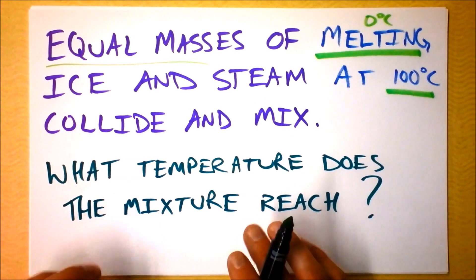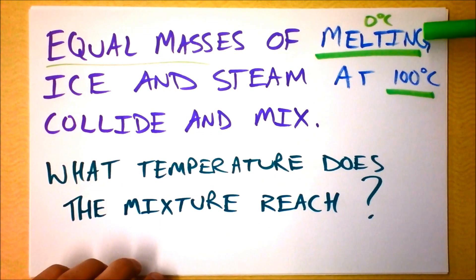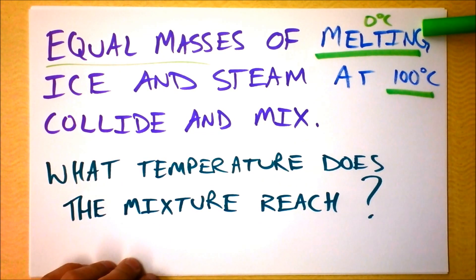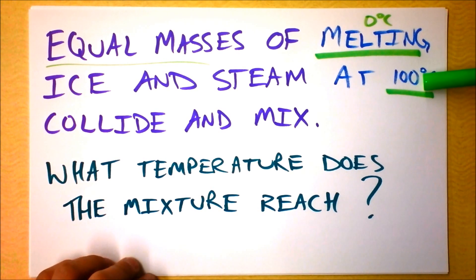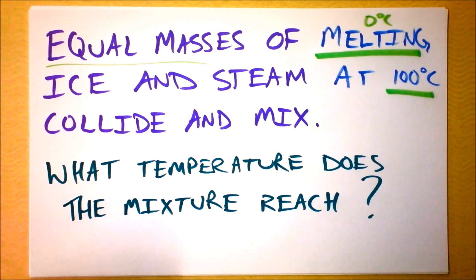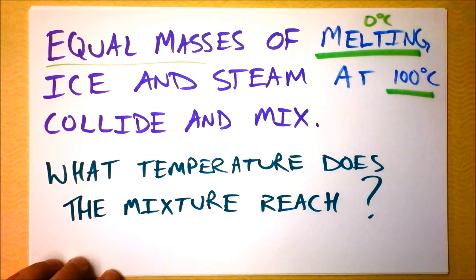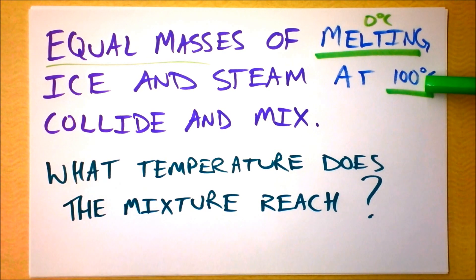So we've got equal masses and they're both about to change phase. All we need to worry about is the fact that the changing of the phase will take some energy or release some energy. And then we also have to consider the energy that goes into changing the temperature of the water that results once the ice has melted or once the steam has condensed.